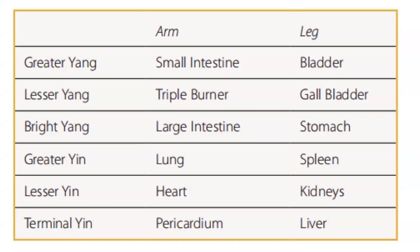For the channels in the arm: the small intestine is part of the greater yang, the triple burner is the lesser yang, the large intestine is the bright yang, the lung is the greater yin, the heart is the lesser yin, and the pericardium is the terminal yin. Its counterparts on the leg: the bladder is the greater yang channel of the leg, the gallbladder is the lesser yang, the stomach is the bright yang, the spleen is the greater yin, the kidneys are the lesser yin, and the liver is the terminal yin.